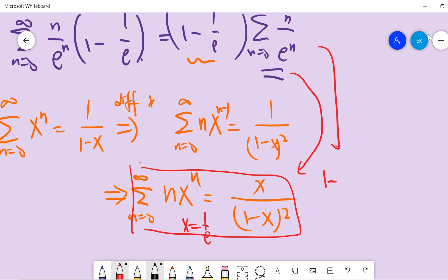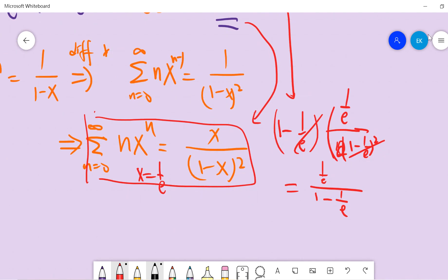This term is (1/e)/(1 - 1/e)^2. After cancellation, we have 1/[e(1 - 1/e)] = 1/(e - 1). Then we multiply both the denominator and numerator by e, giving e/(e - 1).